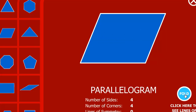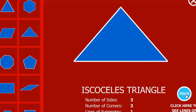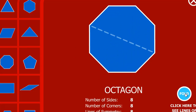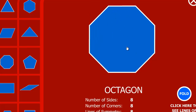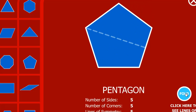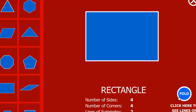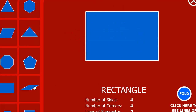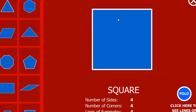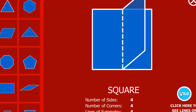If you have a parallelogram, we cannot fold it — zero lines of symmetry. This is an isosceles triangle; we can fold it only in one way. Then octagon — octagon is the shape of the stop sign, and we can fold it in eight ways. Pentagon has five lines of symmetry — one, two, three through the middle. Rectangle we can fold in two ways. A rhombus — I thought it would be like a parallelogram with no symmetry, but we actually can fold it in two ways. Trapezium we can fold once. And square — one, two, and also the diagonal. I got the square wrong — it has four lines of symmetry.